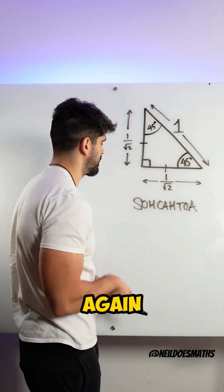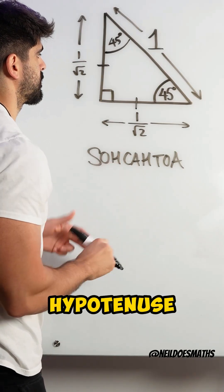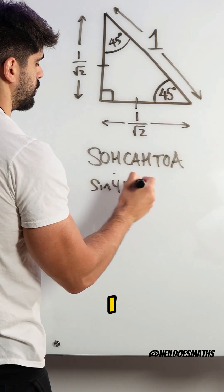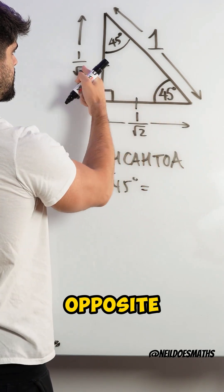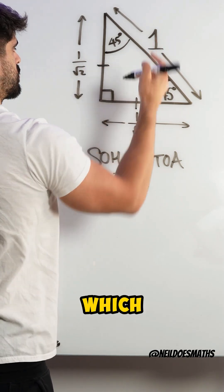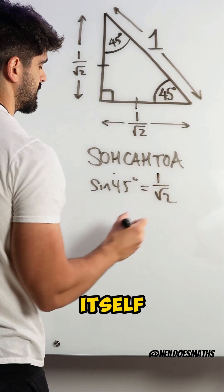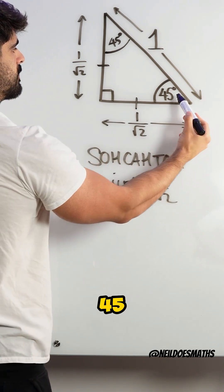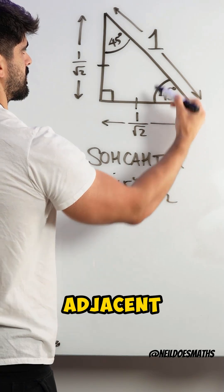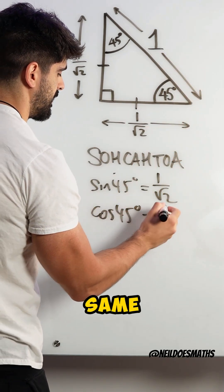And finally, using SOH CAH TOA again: sin is the opposite over the hypotenuse. So if I was to do sin of 45, I would do the opposite, which is 1 over root 2, divided by the hypotenuse, which is 1. Anything divided by 1 is itself. And when we do cos of 45, cos of 45 is the adjacent divided by 1. And you can see they give us the same value.